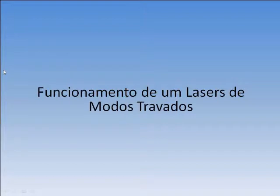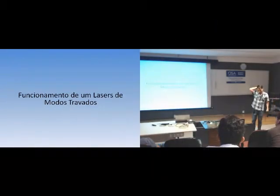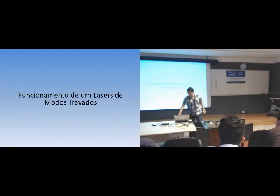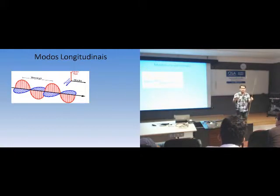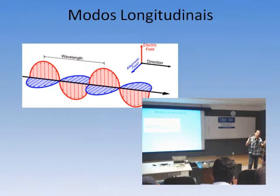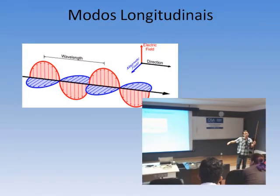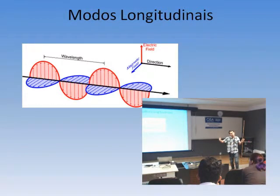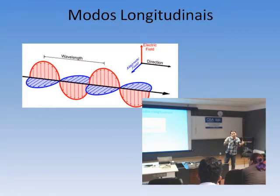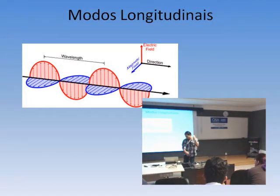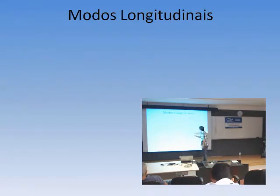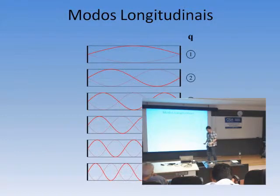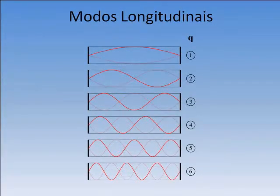Vou falar agora do funcionamento de laser de modos travados — uma visão geral. Quando eu falo de modos, estou falando de modos longitudinais de uma onda eletromagnética. Lembrando de física 2: quando você tem uma corda que você gera pulsos e tem os modos — a corda tem modos transversais, mas onda sonora tem modos longitudinais. Quando eu falo de modos longitudinais, estou me referindo a isso.